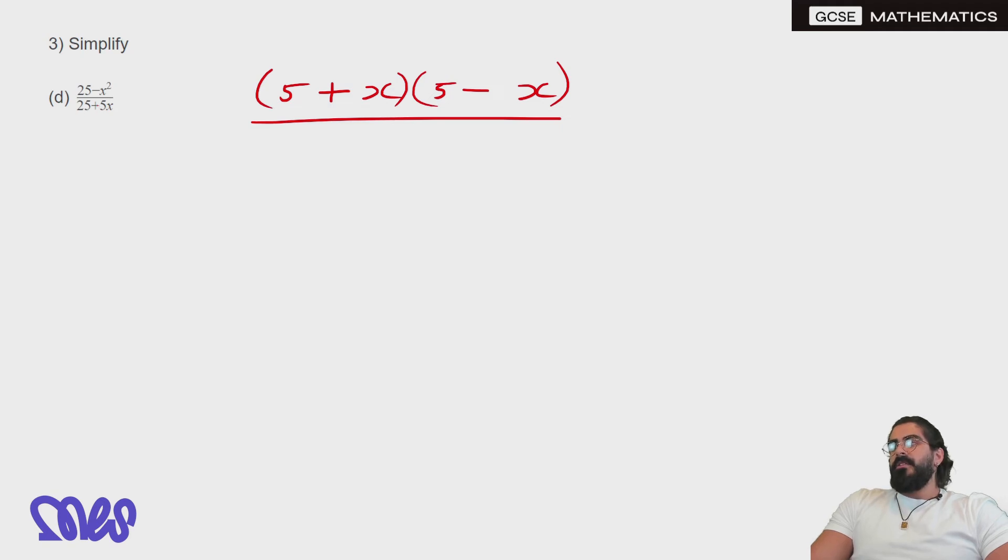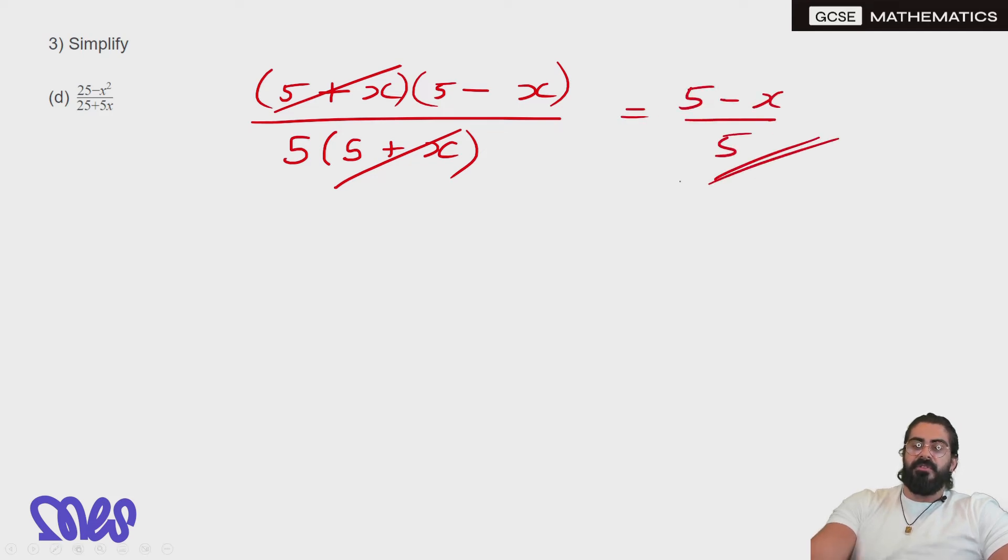Now in the bottom, the only thing we can do there is factorize out of 5, and we'll be left with 5 plus x. So the 5 plus x cancel and we're left with 5 minus x over 5 as our solution.